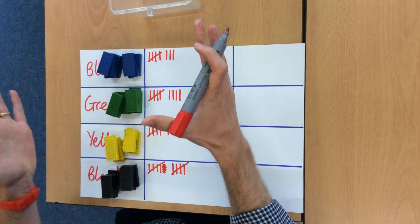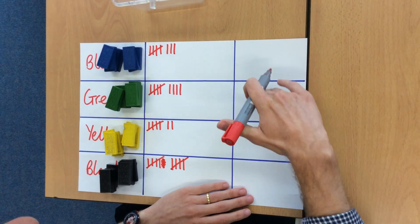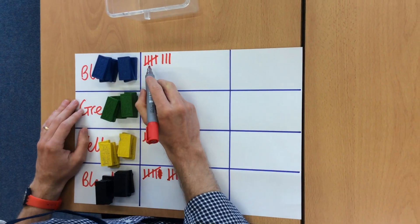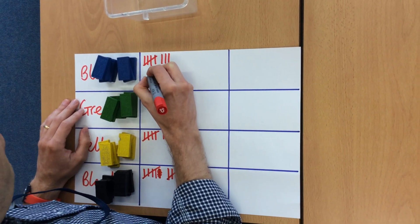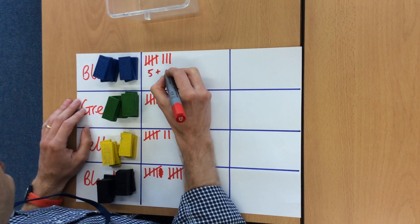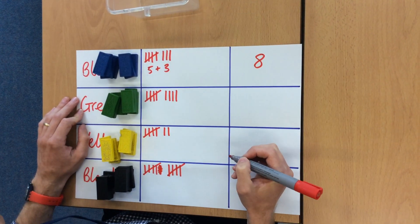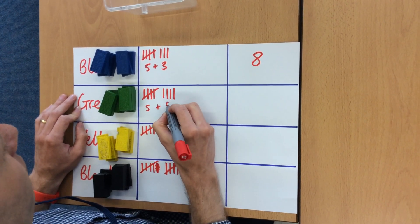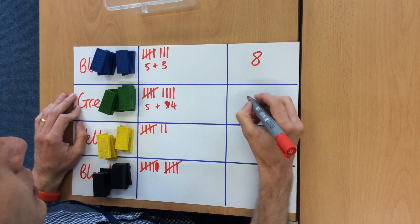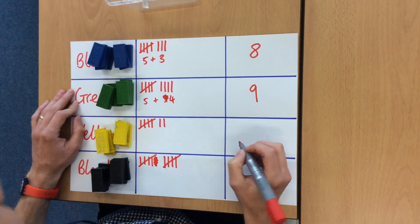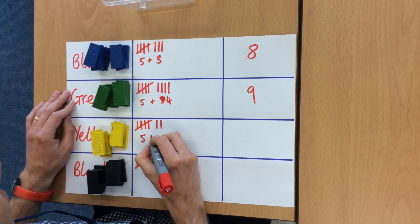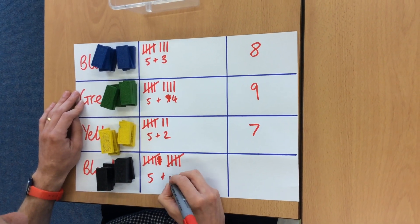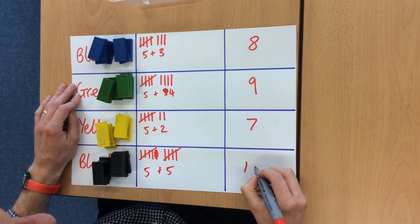Right then. So now I have completed my tally. My next job is actually to write down the digit for each of these values of tallies. So here we go to the blue. I have got five add three, which gives me eight. For green I have got five plus four, which gives me a total of nine. Next I have got five plus two, which gives me seven. And five and another five, which gives me ten.